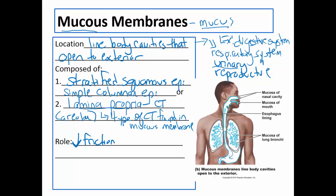Mucous membranes also have other roles. For example, mucus facilitates absorption, which is a role in the digestive system, especially in the small intestine. Another role is protection — think of the mouth or esophagus as food moves down, or the vagina; the mucus protects the surface. Even in the lungs, the mucus catches debris, and then cilia push the debris upward towards the mouth or nose so it doesn't reach the lungs. That would be protection.